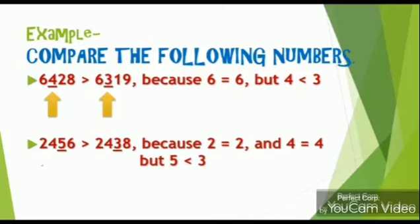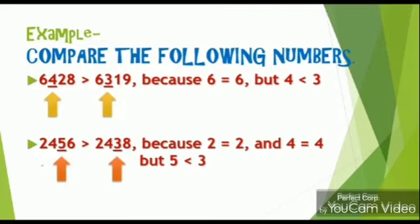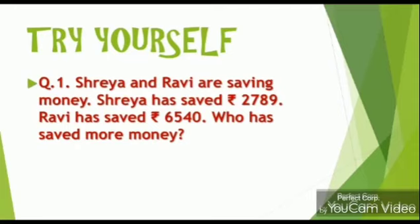Moving to another example: 2456 and 2438. Both numbers have the same number of digits, and both have 2 as their extreme left digit. Moving towards the right, we have 4 in both numbers. Moving further right, we have 5 in the first number and 3 in the second. Comparing 5 and 3, it is clear that 5 is the greater one, so 2456 is the greater number.